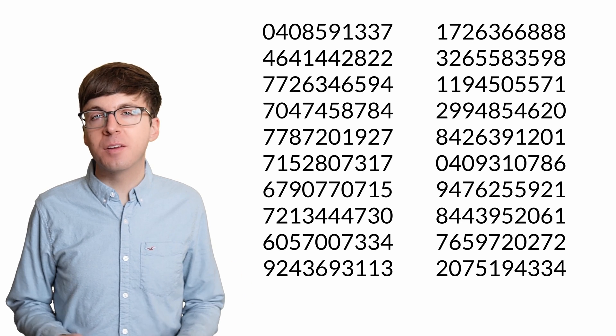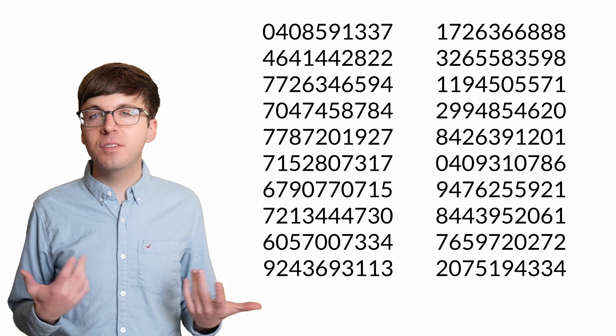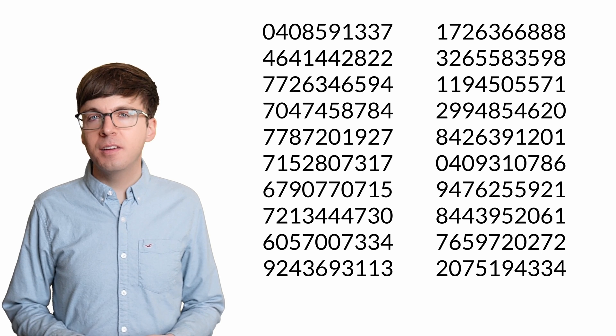One of these sequences is made of random digits, and the other is some of the digits of pi. Can you tell which is which?